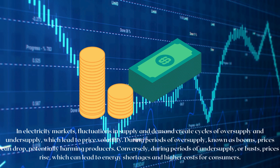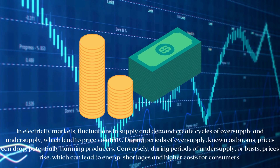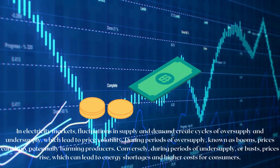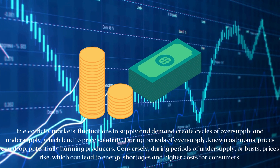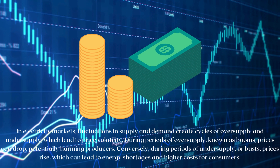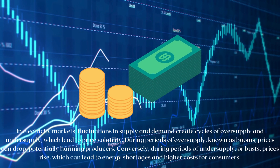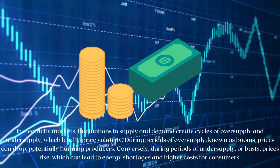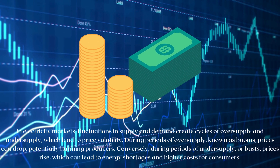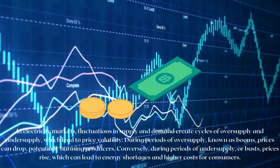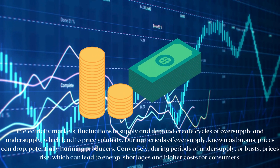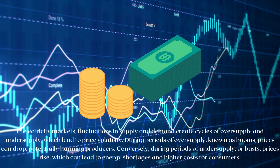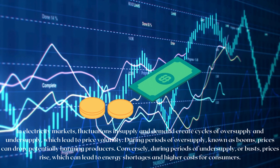In electricity markets, fluctuations in supply and demand create cycles of oversupply and undersupply, which lead to price volatility. During periods of oversupply, known as booms, prices can drop, potentially harming producers.